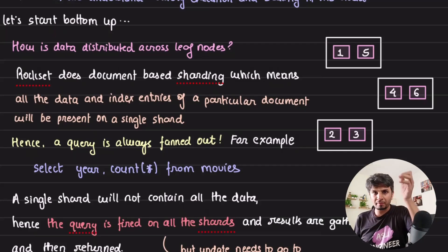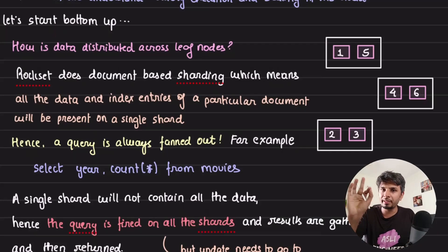The first key detail is that Rockset does document-based sharding, which means whenever you are ingesting a document with a specific ID in Rockset, given the n number of machines in the leaf nodes, it would take the ID, pass it through a hash function, get an index, and store that document in the corresponding leaf node.